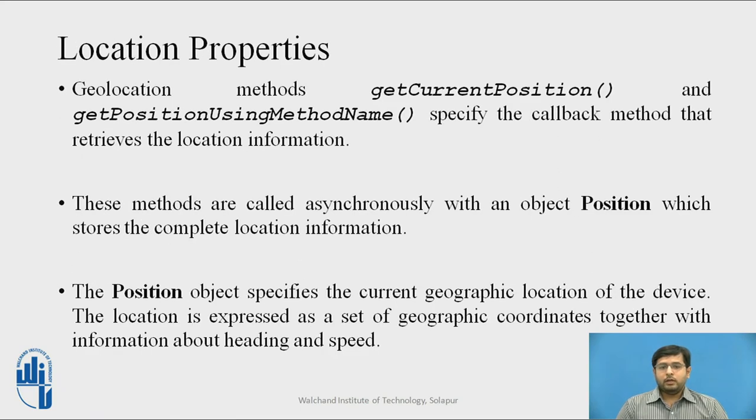Properties of geolocation are getCurrentPosition and getPosition using method name which specifies the callback method that retrieves the location information. There are a number of properties which can be called through these methods. These methods are called asynchronously with an object position which stores the complete location information. The position object specifies the current geographic location of the device. The location is expressed as a set of geographic coordinates, that is the latitude and longitude, together with the information about the heading and speed.